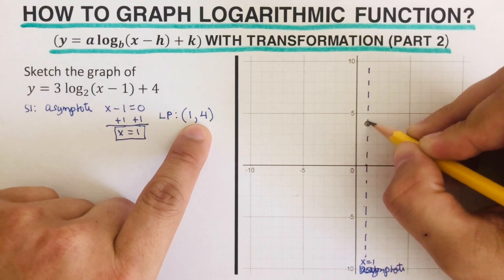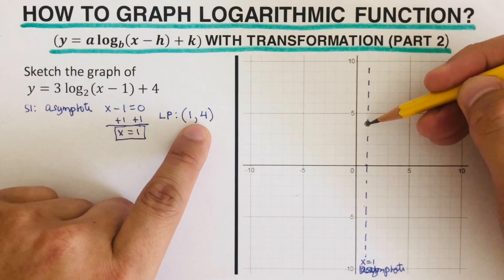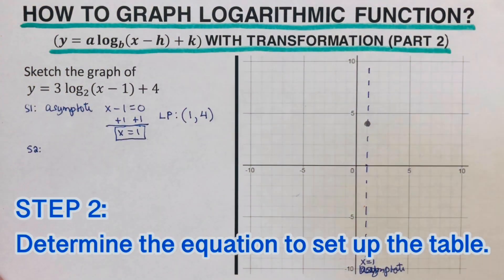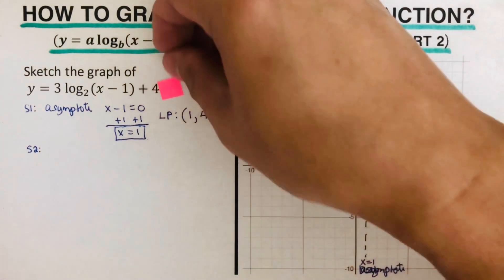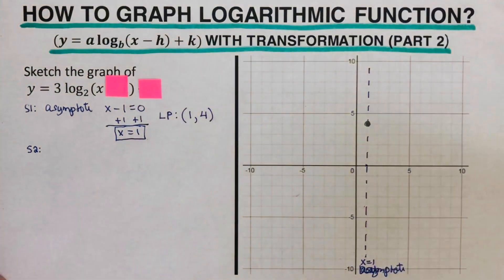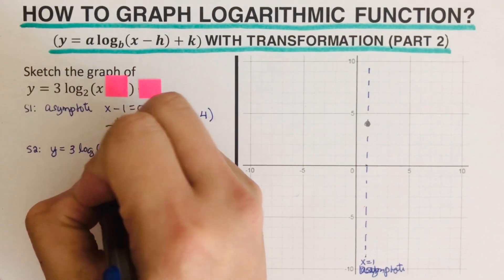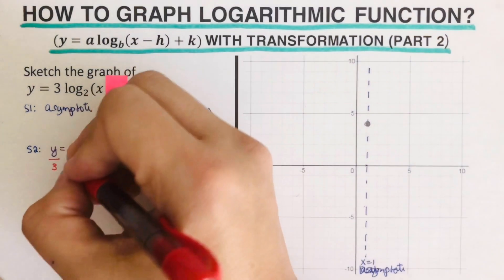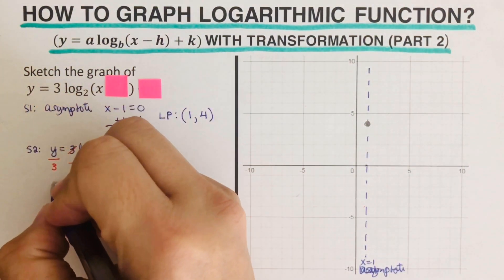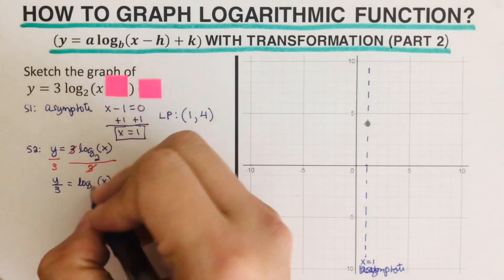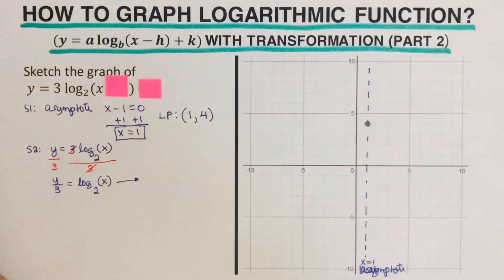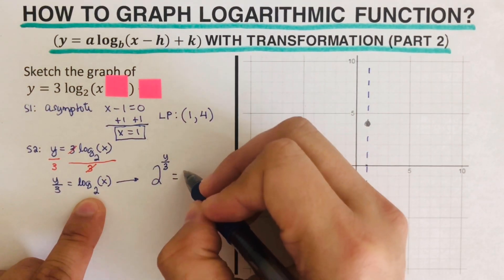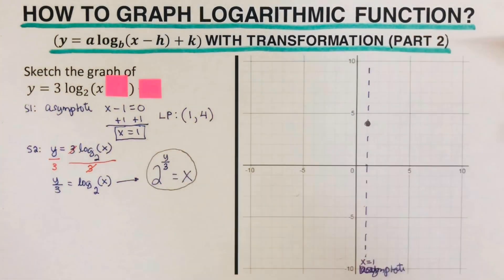I'm using a pencil because I'll erase the locator point once we've graphed it — remember, the locator point is not part of the graph. Step two is to determine the equation to set up the table. To find the equation, we cover the h and the k. The remaining equation is 3 times log base 2 of x. We divide both sides by 3, leaving y over 3 equals log base 2 of x. Converting to exponential form gives us 2 to the power (y/3) equals x — this is the equation we'll use to set up the table.